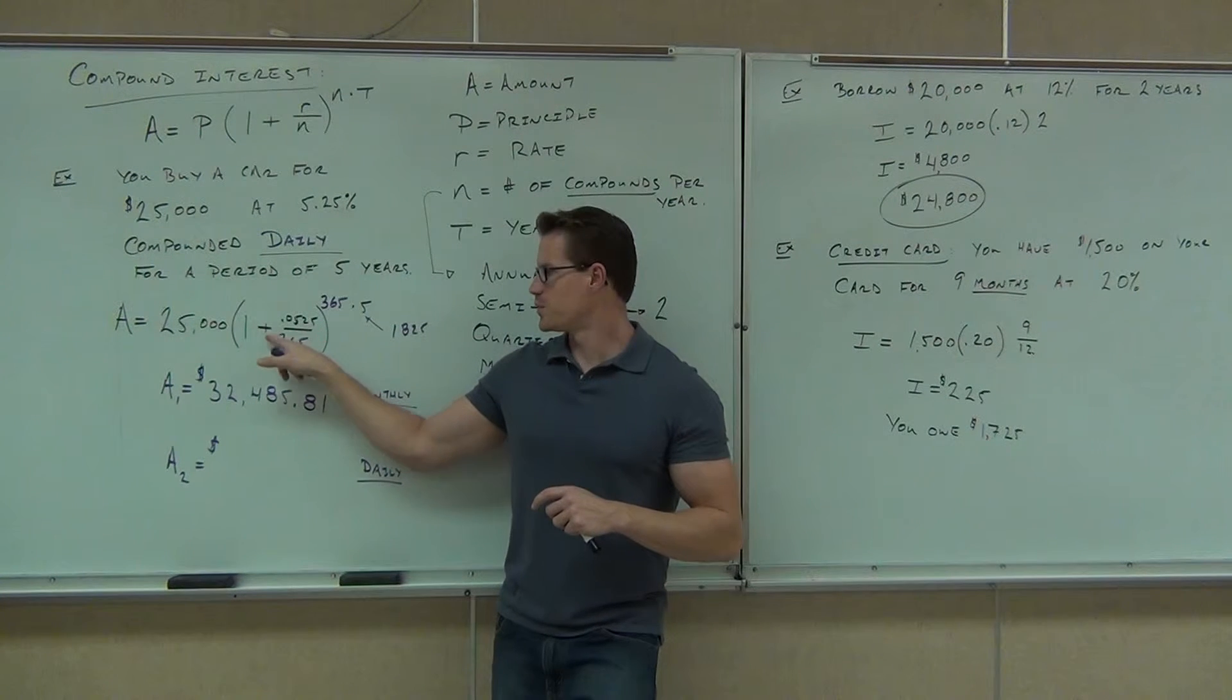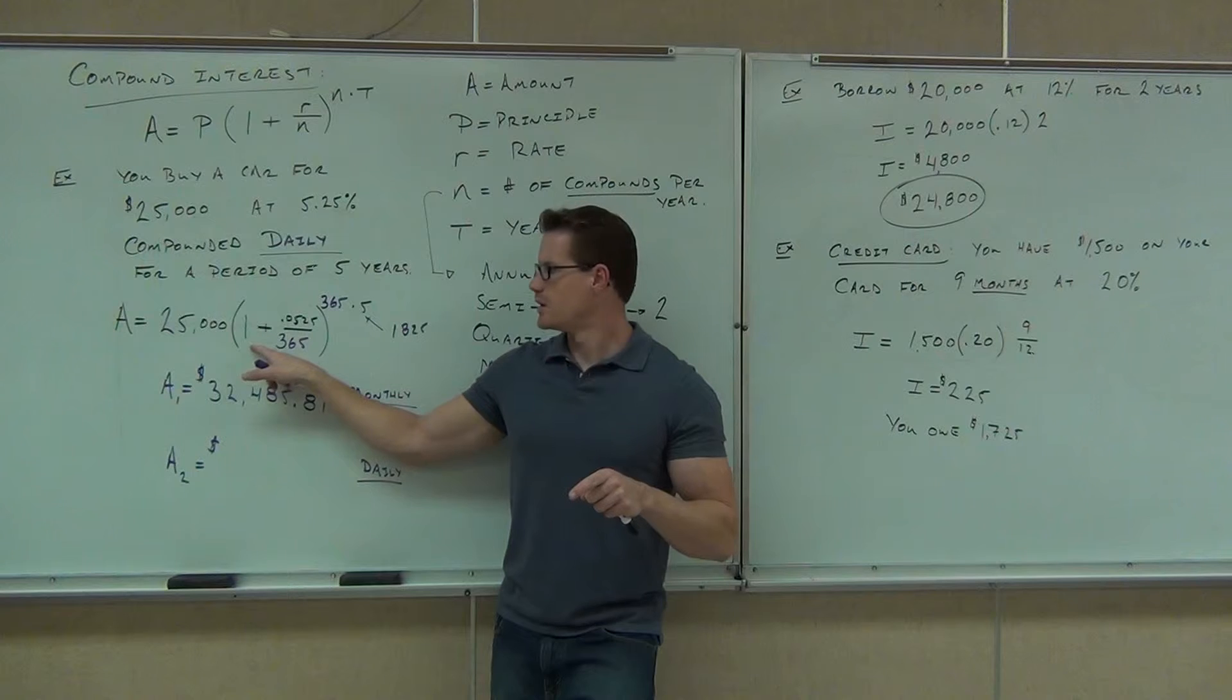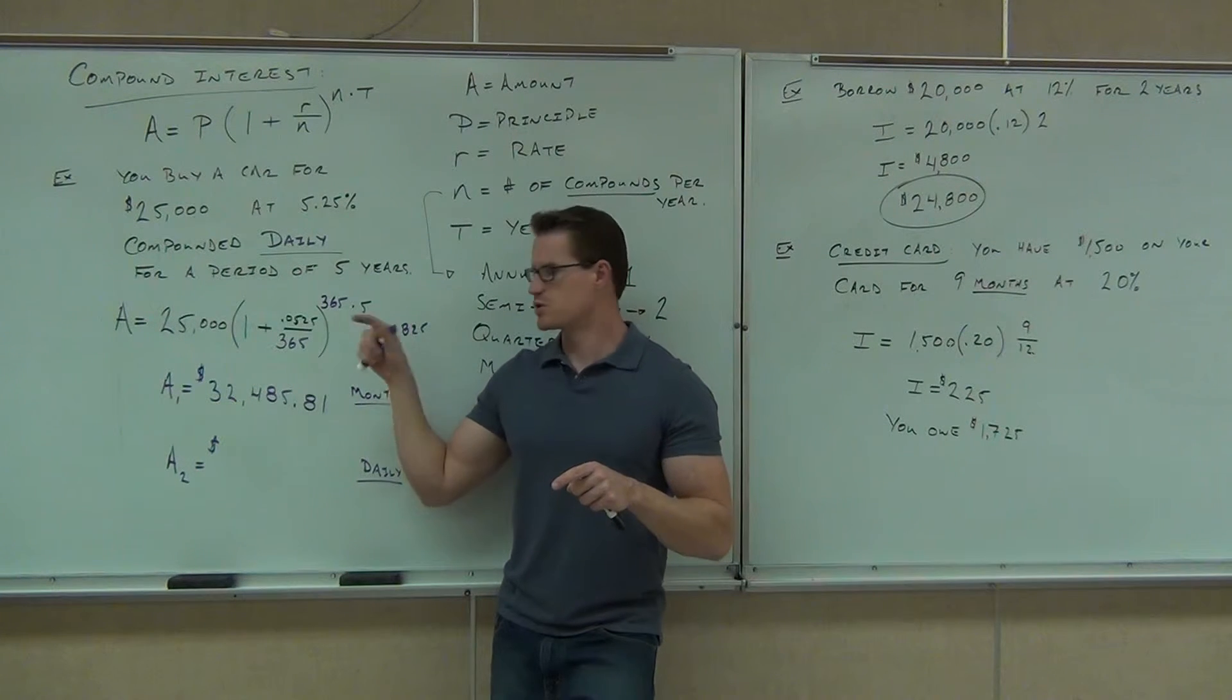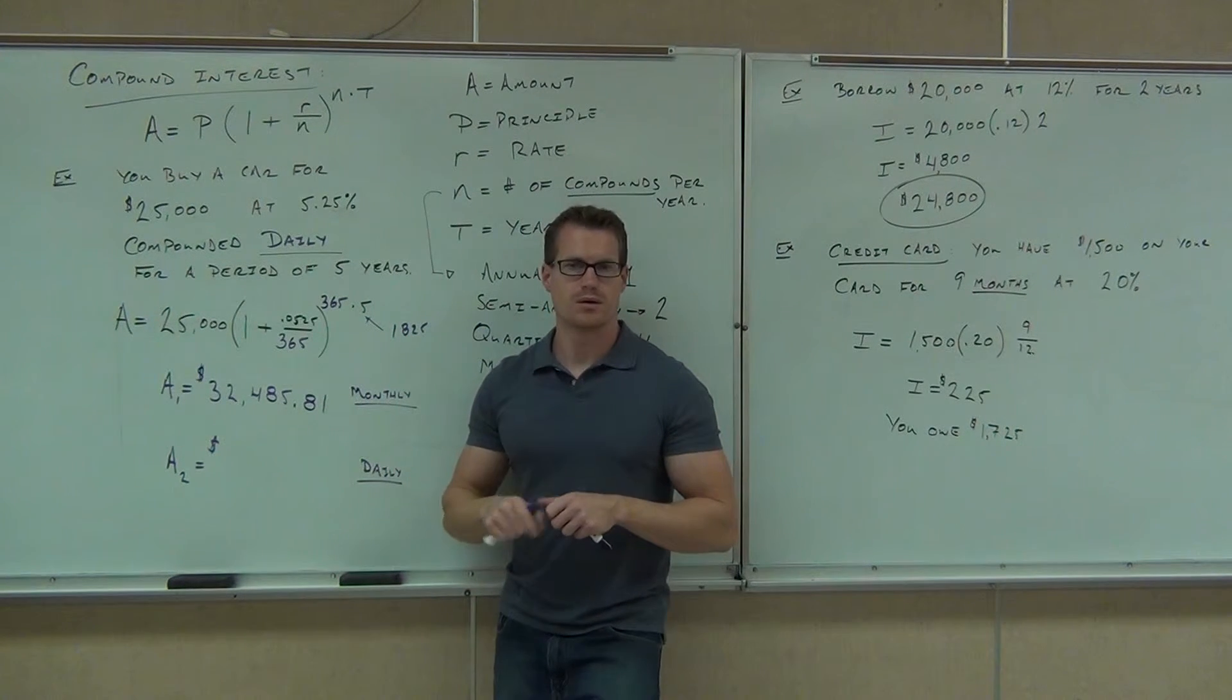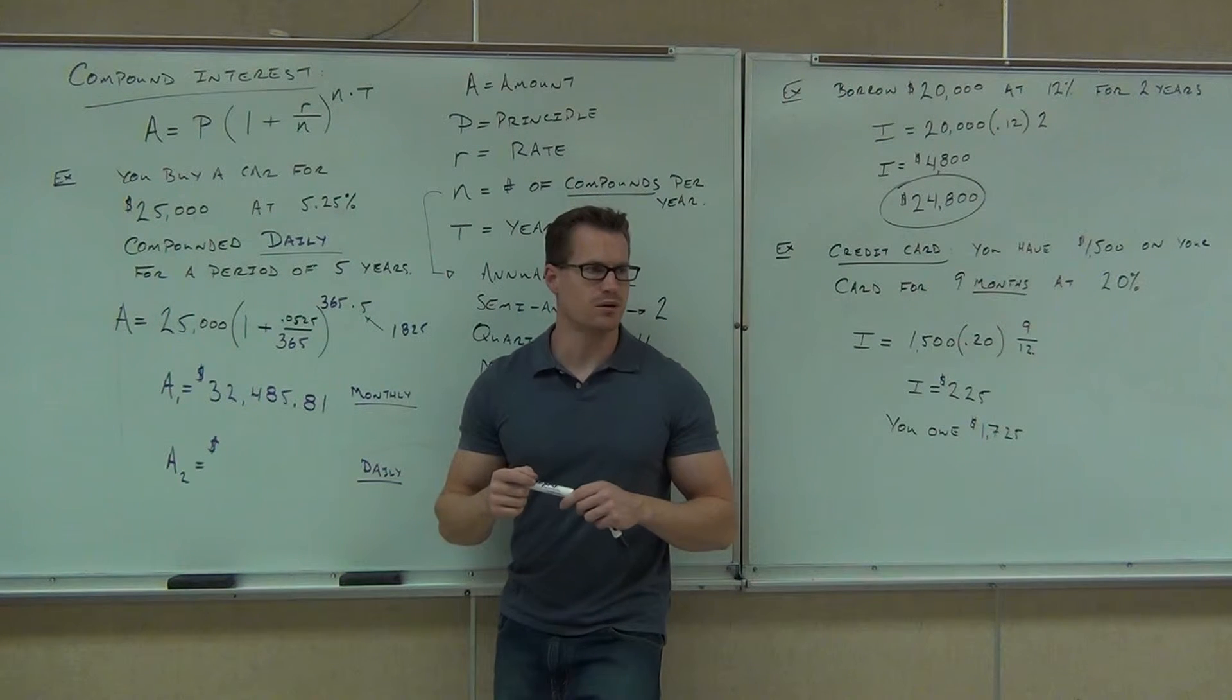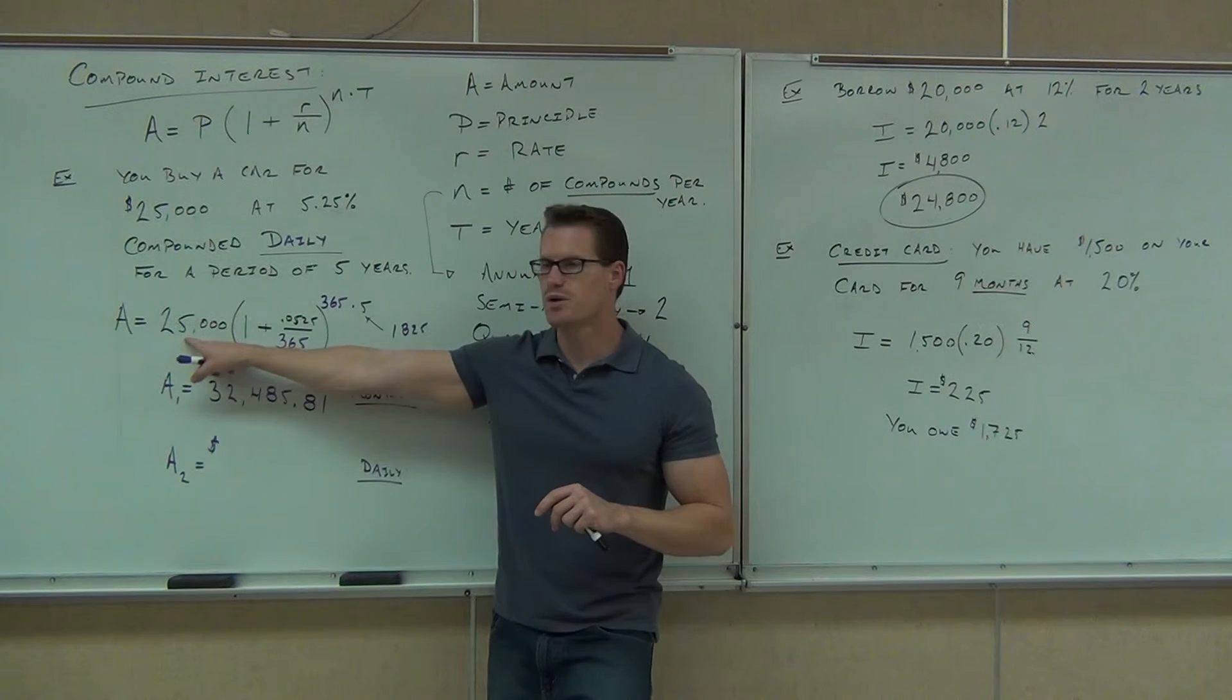Plus one, enter. Or equals. You got that? It should be 1.00 something. Yeah. Now, take it to the 1,825th power. So that's the caret button or the x^y or the y^x. Press 1825. Press enter. It should still be one point something. You still have that? Now, take times 25,000.